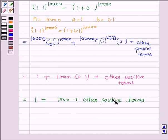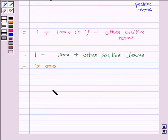Now in this whole expression we see that we are adding some positive terms to 1000. That means this whole term or the expression is strictly greater than 1000. Hence 1.1 to the power 10,000 is strictly greater than 1000.